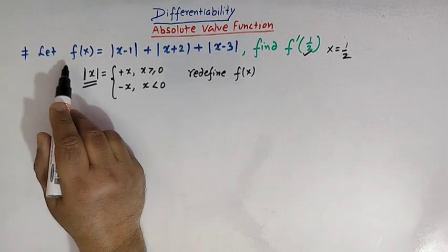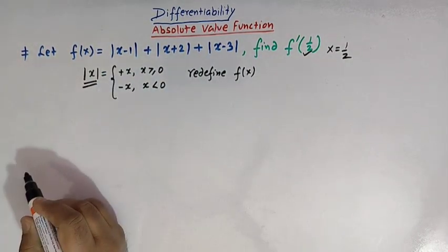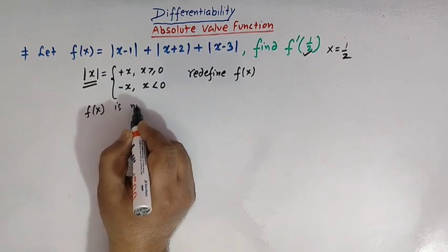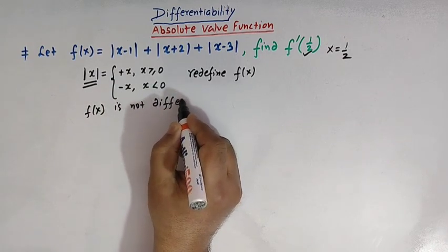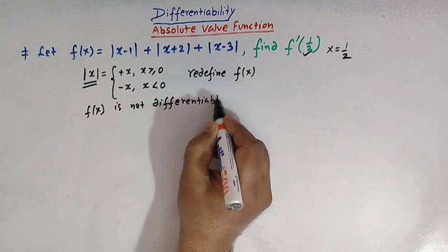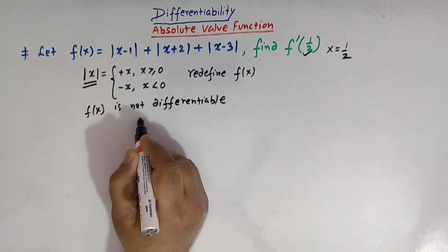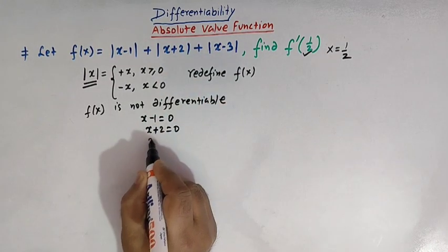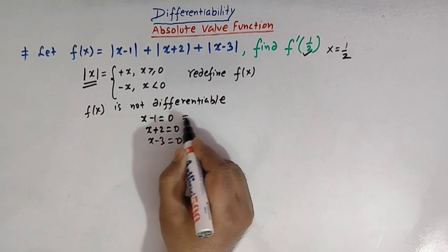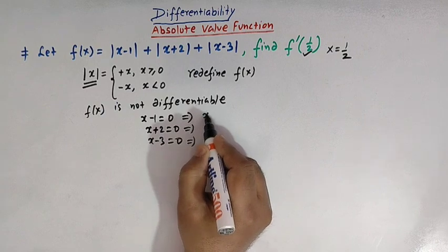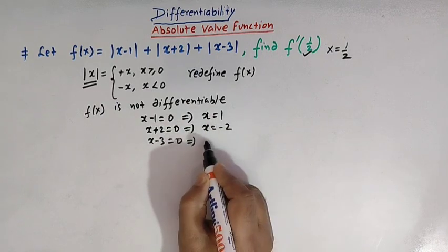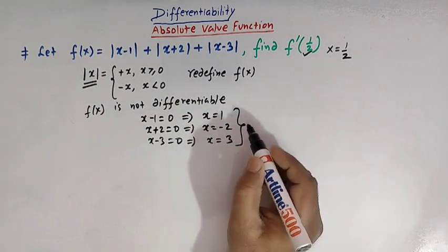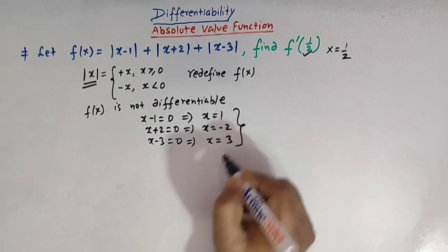If we closely look at this function f of x, we can easily see that f of x is not differentiable at the points given by x minus one equals zero, x plus two equals zero, and x minus three equals zero. Solving these three linear equations, we get x equal to one, minus two, and three. So this function f of x is not differentiable at these points: one, minus two, and three.